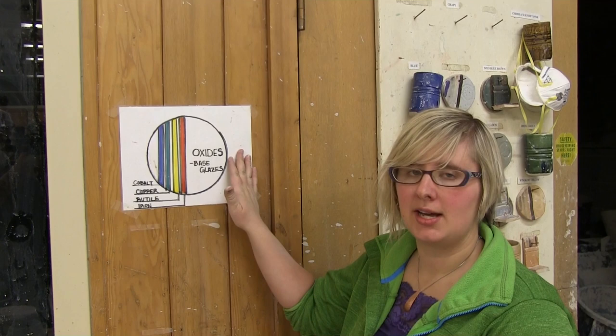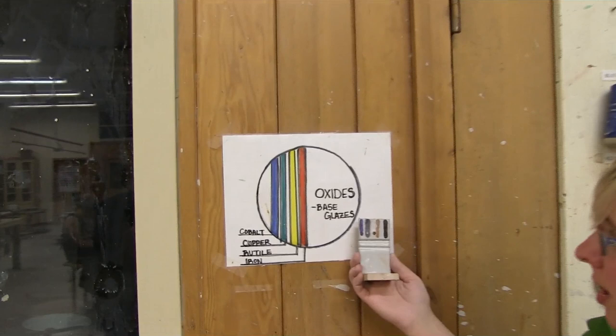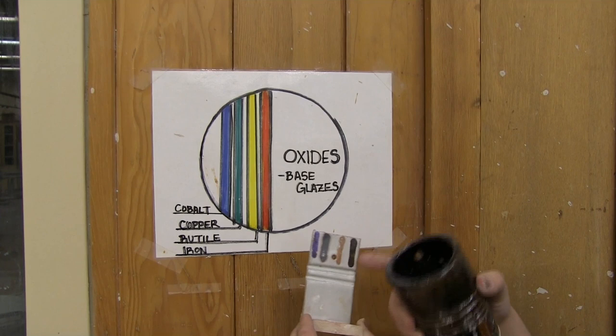When you're deciding what kind of oxides to use on top of your glaze, this little chart can be really helpful in deciding what those colors are going to look like after you put them on. You'll notice all of the tiles, whether they're shaped like this or like this, there's a section where there are four stripes.